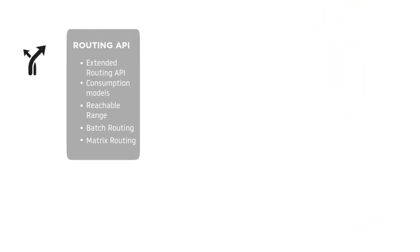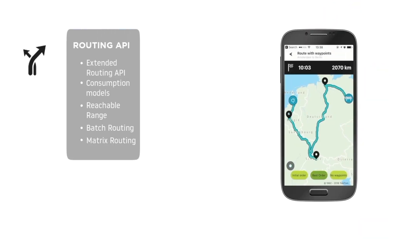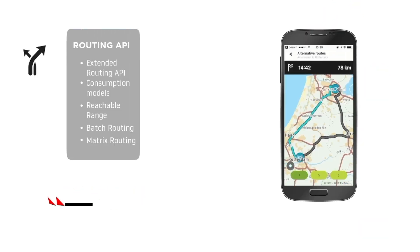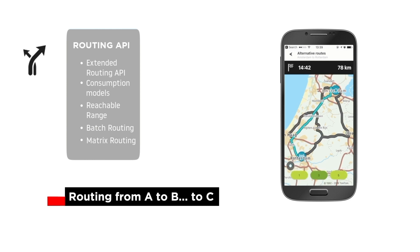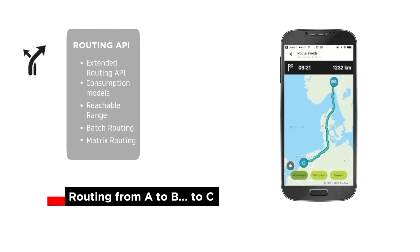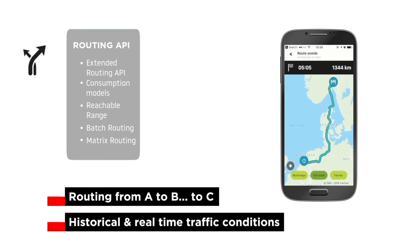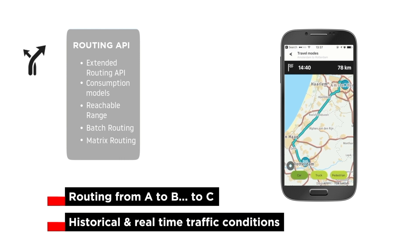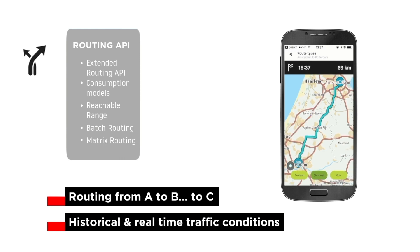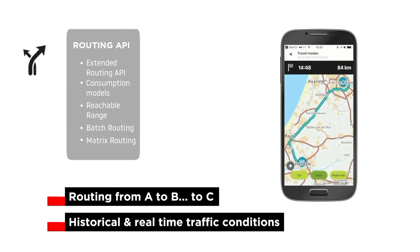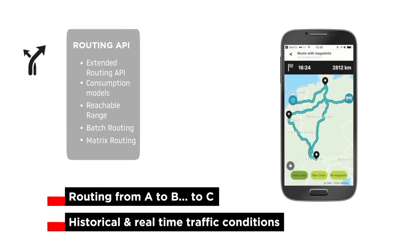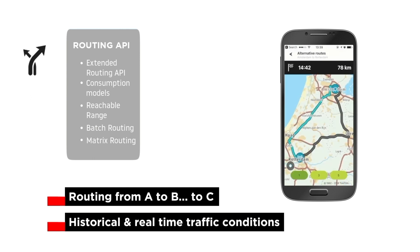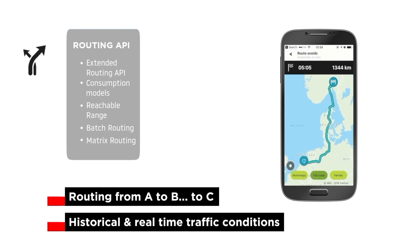This is my favorite. The Routing API enables planning a route from A to B to C, considering both historical and real-time traffic conditions. Applications can provide users with highly accurate travel times, live travel updates, and route instructions. This is for both internal combustion engines and electric vehicles.